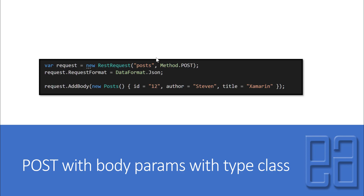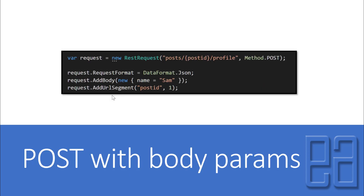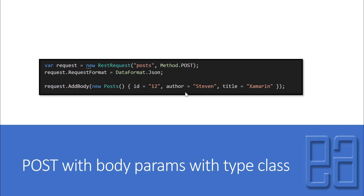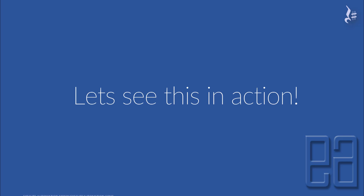I've created a new model called Posts, and within this model I have three properties: ID, author, and title. I'm going to pass these values and perform a POST operation on our fake JSON server, which will create a new post. This is really useful because you have a strongly typed class, as opposed to the anonymous class we used earlier — you can still pass properties like this as input to the server.